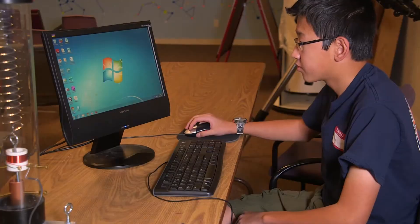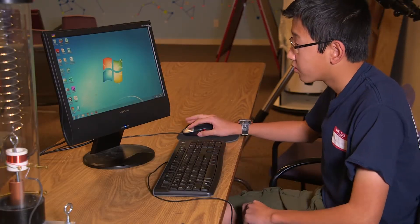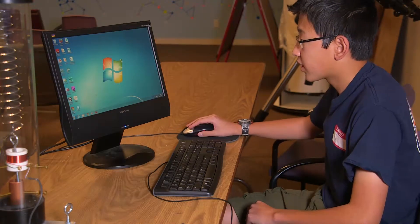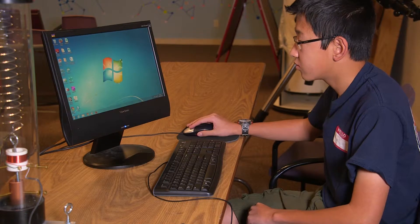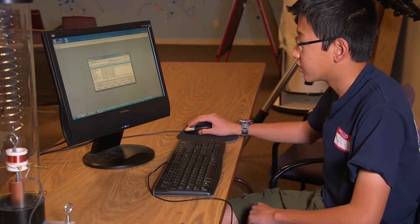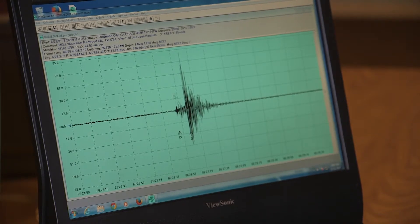We have three main programs that we use to record data from the seismometer: Windquake, Amisize, and Jamisize. The most effective for looking at previous data would probably be Windquake. You see all these files and you can just choose one and have it open. Here it'll show you the P and the S waves. The P waves start here and the S waves start here.